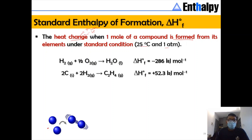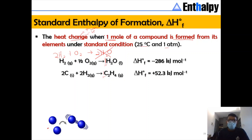The heat change can be positive or negative. You need to be very careful because the definition states that one mole of a compound is formed, so you must ensure the product compound is exactly one mole. You cannot write H₂ + O₂ → 2H₂O, because that produces two moles of the compound, not one. To correct this, divide by two, so the coefficients become ½ and 1 respectively.